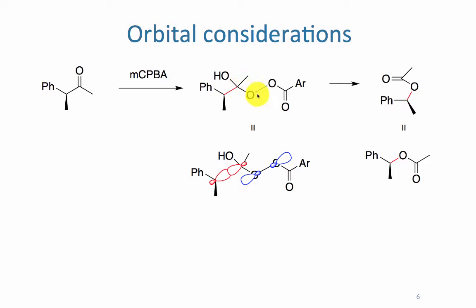Notice we have that weak oxygen-oxygen bond. And we have to decide between the secondary group versus the primary, simply methyl group to migrate. It will be the secondary group that will migrate preferentially.